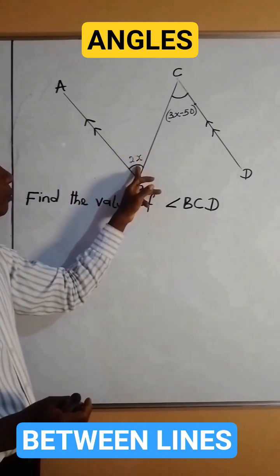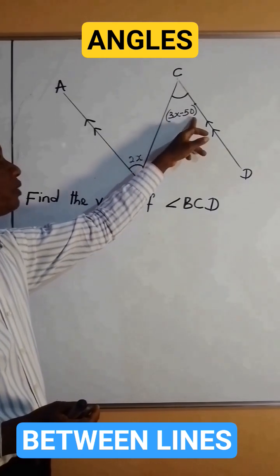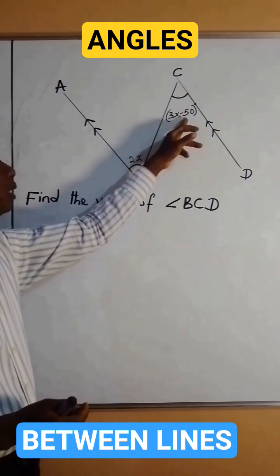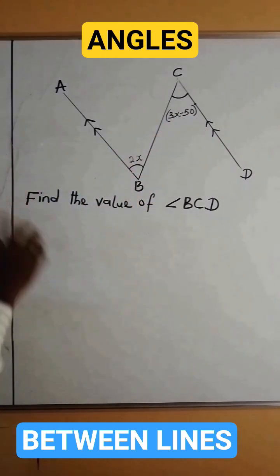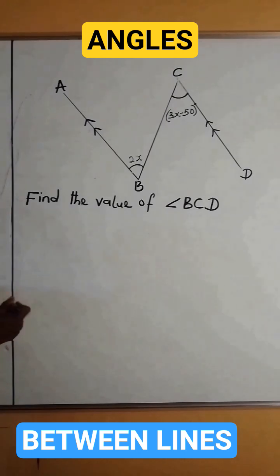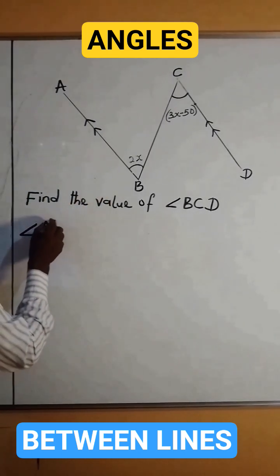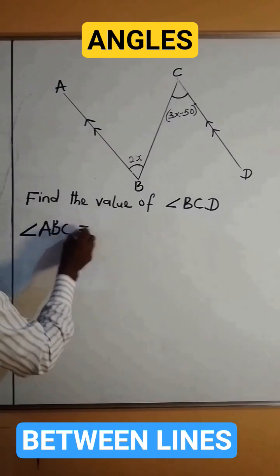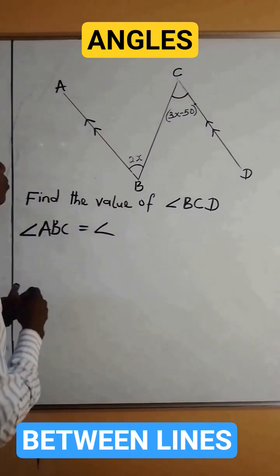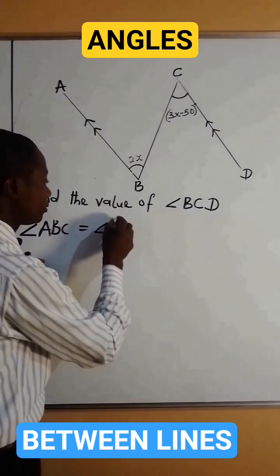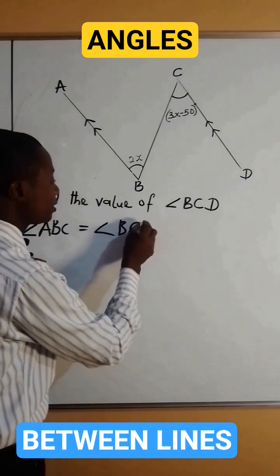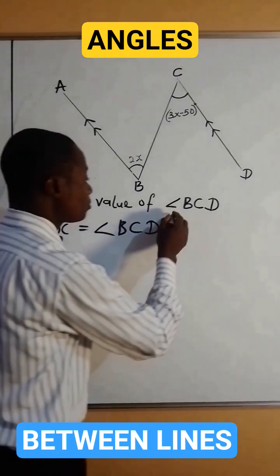So 2x equals 3x minus 50, because the two angles are alternate. The implication here is that angle ABC equals angle BCD, so alternate angles are equal.